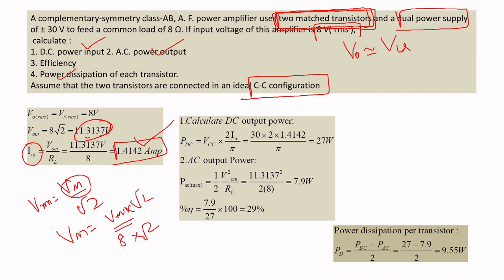DC power is P_dc = VCC × (2Im / π). Substituting the known values gives 27 watts. AC output power is P_ac = (1/2) × Vm² / RL = 7.9 watts. Efficiency is η = P_ac / P_dc = 7.9 / 27 = 29 percentage.